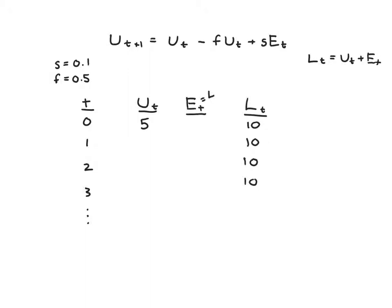And then finally, let's remind ourselves, Et, based on our equation on the far upper right, is Lt minus Ut. So if we know Lt and Ut, which we do for period 0, we can calculate Et - it must be 5, so that they add up to 10.